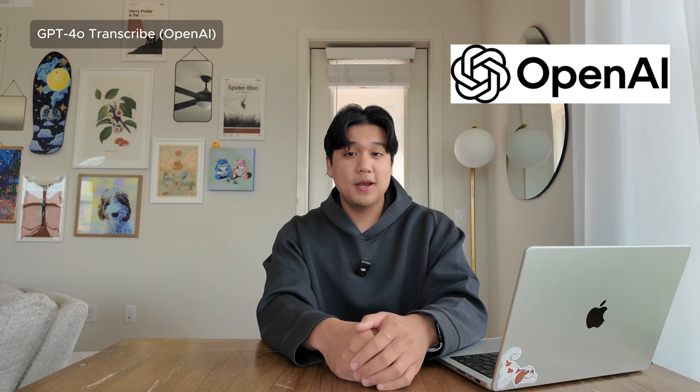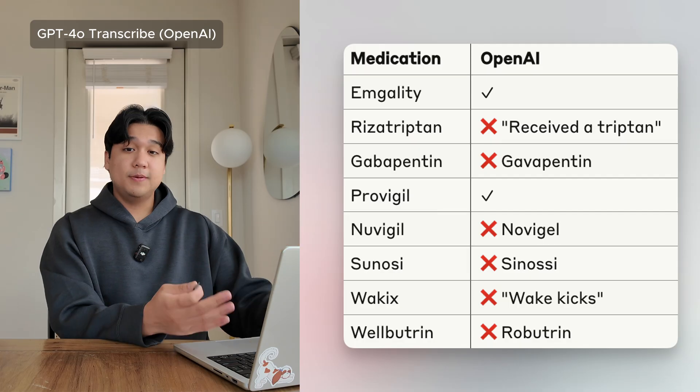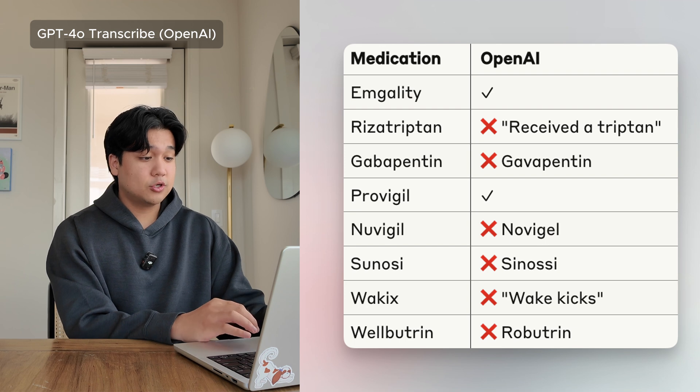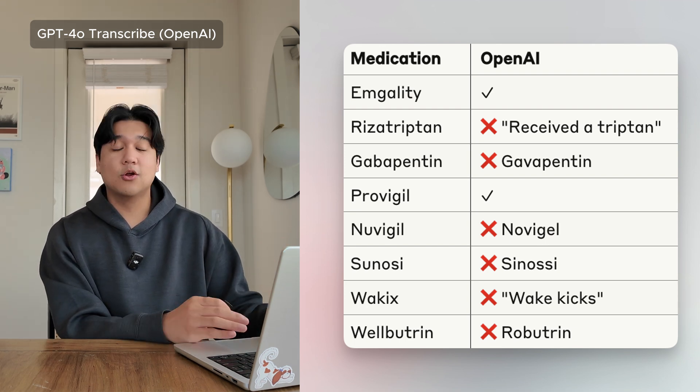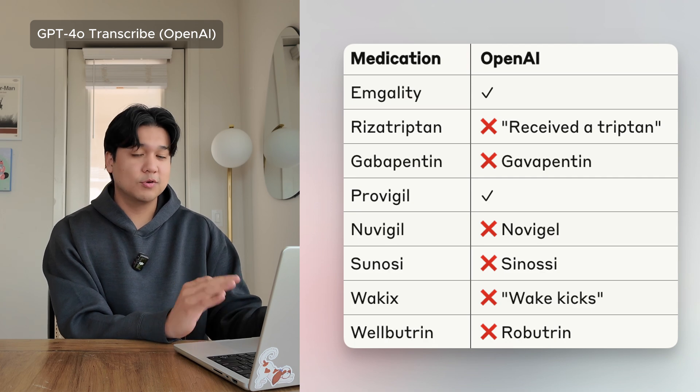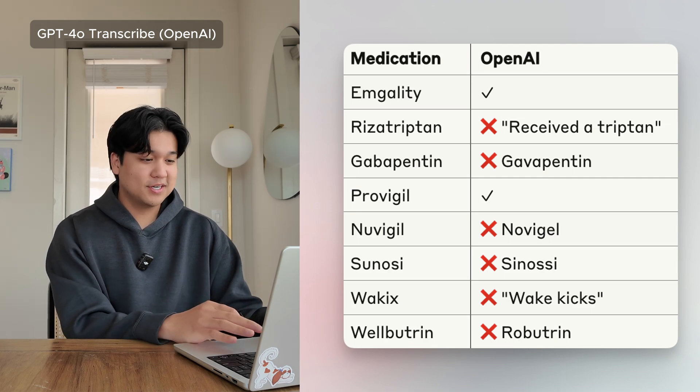The next model we benchmarked was GPT-4o Transcribe. This is OpenAI's latest and most advanced speech-to-text model, actually outperforming their previous model, Whisper, which a lot of medical applications use. GPT-4o Transcribe did get a couple terms like amgality and Provigil correct, but there were a ton of mistakes — it only got about 25% correct, which is definitely not good enough. We weren't that surprised, because compared to the other models, this one was not meant for medical; it's more of a general transcription model.